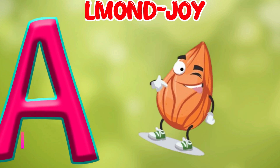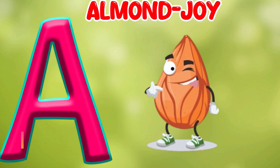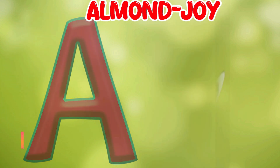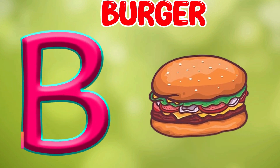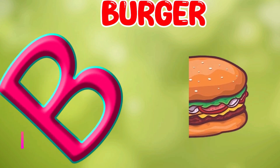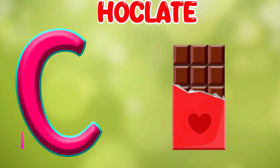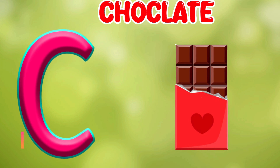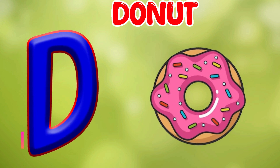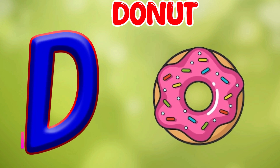A is for Almond Joy. A. Almond Joy. B is for Burger. B. Burger. C is for Chocolate. C. Chocolate. D is for Donuts. D. Donuts.